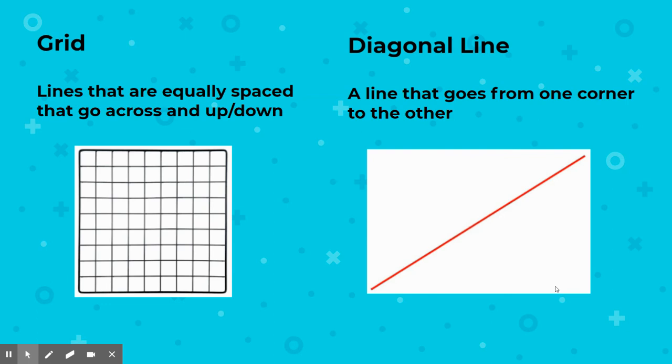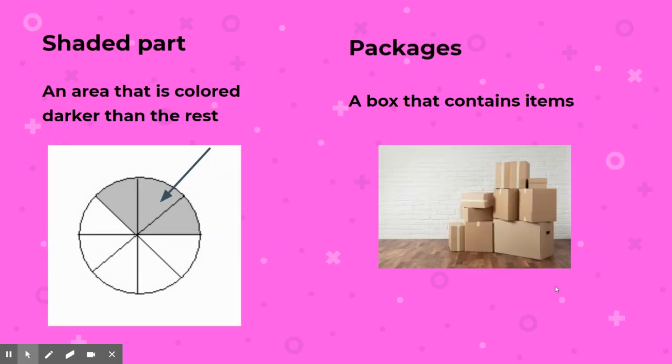A grid — lines that are equally spaced going across and up and down. A diagonal line goes from one corner to another. These are words that will also pop up in these lessons. Shaded part comes up during fractions too, and in division we start to think about those things — it's an area that's colored darker than the rest.